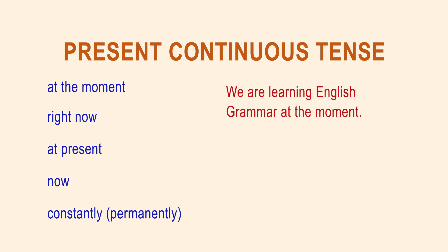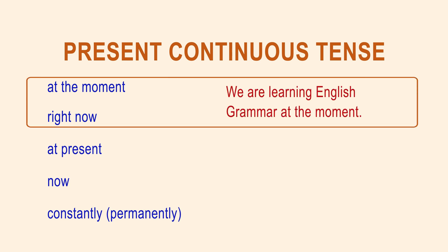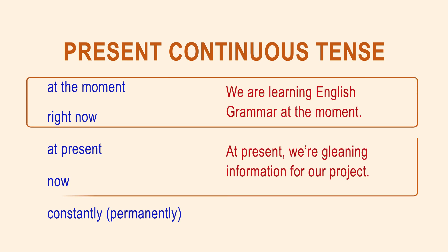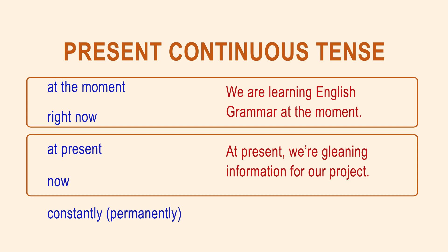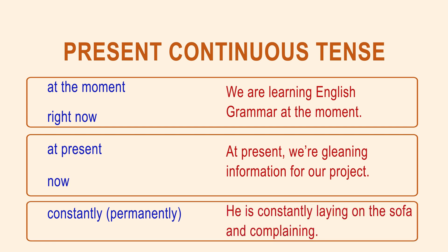Let's look at these time markers in the sentences. We are learning English grammar at the moment. At present, we're gleaning information for our project. He is constantly laying on the sofa and complaining.